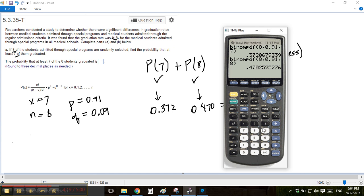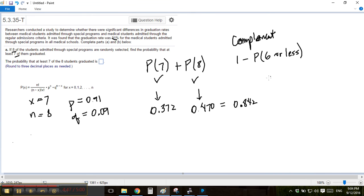So actually first I need to do 1 minus, and I'm going to do distribution and go down to binomial CDF, and I'm going to put in the same thing as there's 8 possibilities. There's 8 people that are potentially graduating, comma, 0.91 comma is the probability that somebody graduates, and then 6 is the people that we think won't graduate. And so you notice we get 0.842, which is the exact same answer. And that just shows you how to do it in one step.